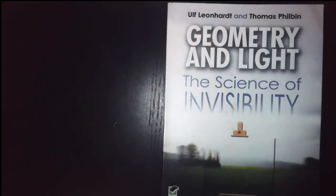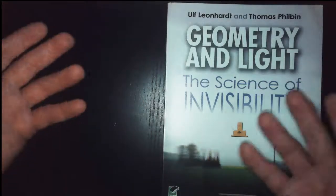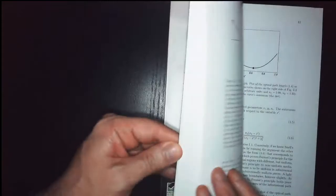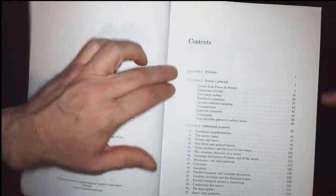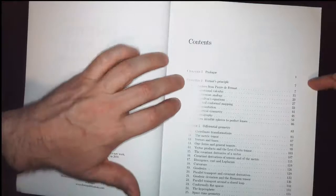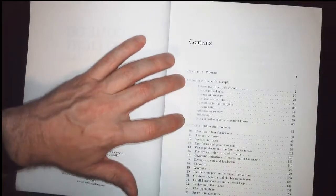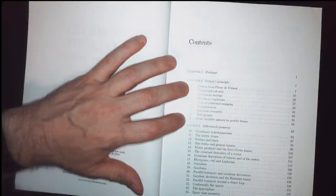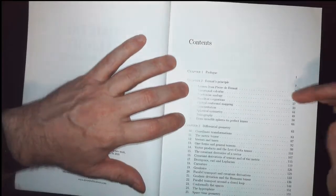It's going to talk a little bit about Fermat's stuff. But it's also going to apply the rules of general relativity, the geometry of general relativity, to light. And that's what's going to let you see, or not see, an invisible situation where you can make something invisible. So let's take a peek at the contents. We have a prologue, we have Fermat's Principle. The first chapter is all on Fermat's Principle, Letters from Pierre de Fermat. That's more or less an introduction to all these things.